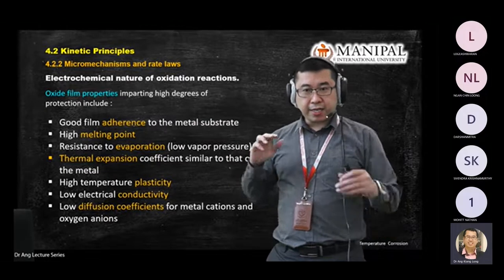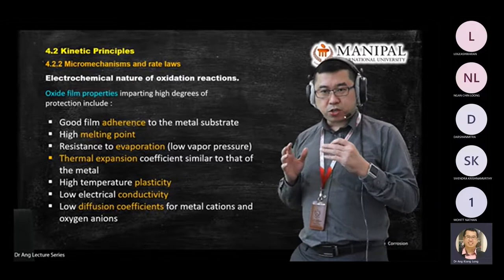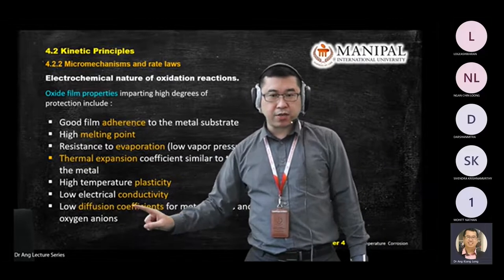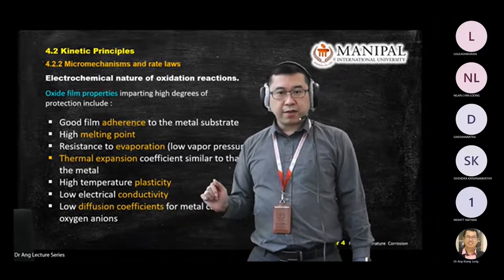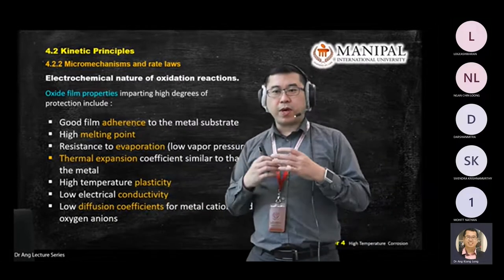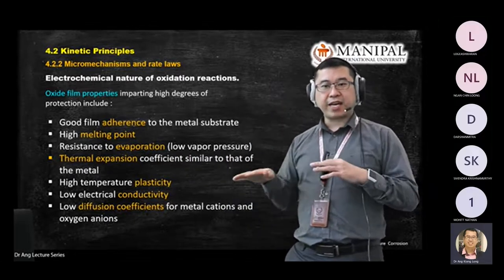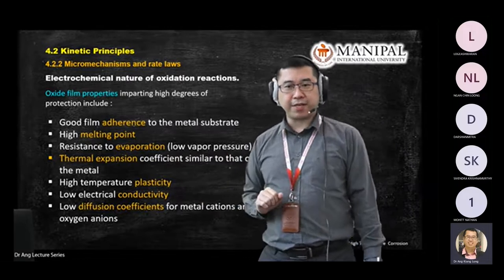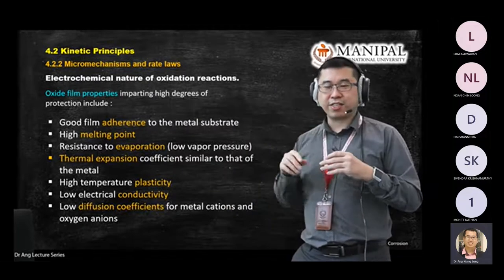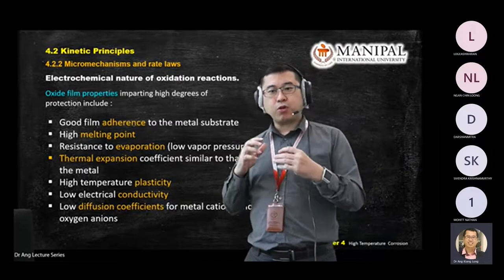This explains why oxide at the early stage of its formation is good for protection. The rest you can read here — low electricity conduction. Why is this good for oxide? Because corrosion starts when you have an exchange of negative charge. So if you cannot allow conductivity to happen, the exchange of electrons cannot happen. When that cannot happen, corrosion is limited.